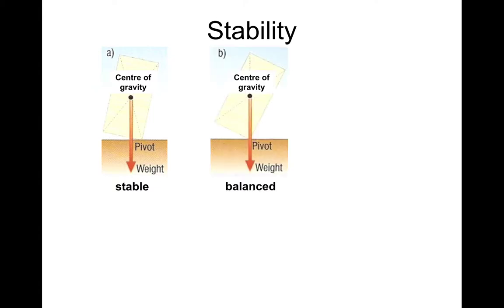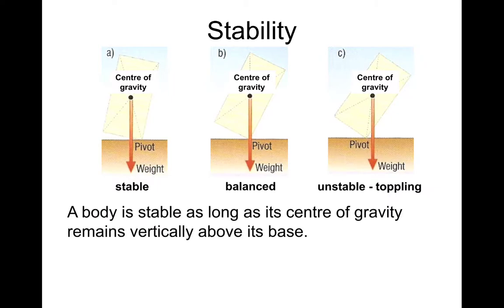So stable balance, you know, that one would theoretically stay on the point. Might be a bit tricky in real life. And this one where the centre of the line of action of the weight from the centre of mass or centre of gravity falls outside the base. You'd get a clockwise turning effect and it would fall over. So a body is stable as long as its centre of gravity or mass remains vertically above its base. And if this is not the case, the body will indeed topple over.